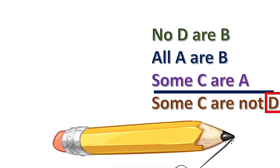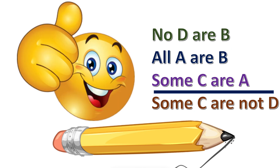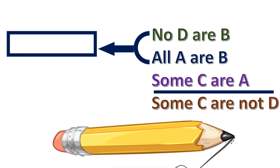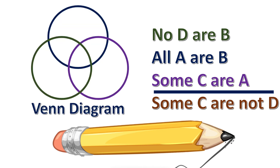The predicate of the conclusion is in the first premise. The other term from the first premise is in the second premise, and so on. Once the sorites is in standard form, you can derive the intermediate conclusion, which is the conclusion implied by the first two premises. One of the easiest ways to do this is with a Venn diagram.